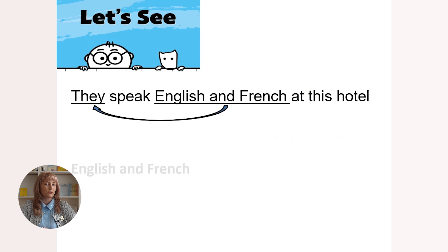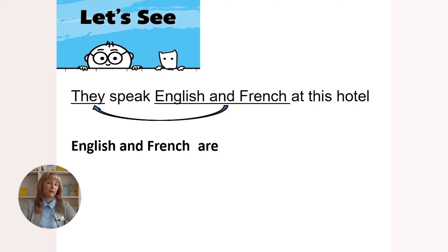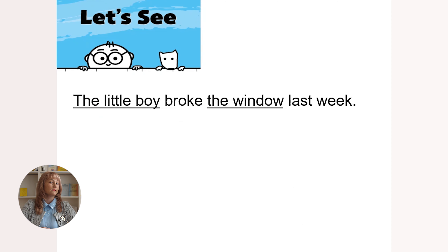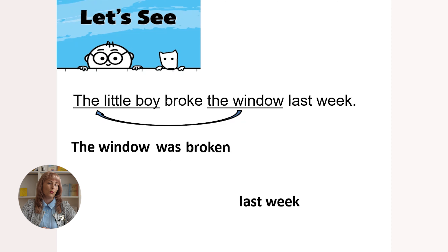Now let's work together on transforming active voice into passive. First example: 'They speak English and French at this hotel' — present simple. In passive voice: 'English and French are spoken at this hotel.' Next: 'The little boy broke the window last week' — past simple. In passive voice: 'The window was broken by the little boy last week.'